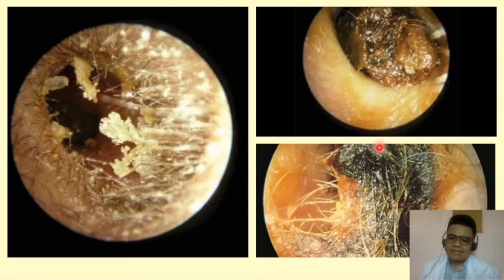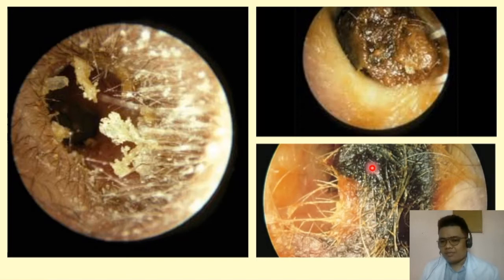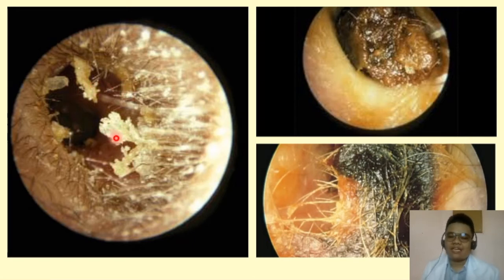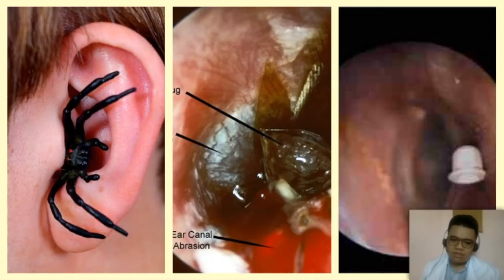These are examples of impacted cerumen. Notice that there are hairs, and there may be flakes or flaking, which may also be caused by seborrheic dermatitis, aggravated by stress reactions.